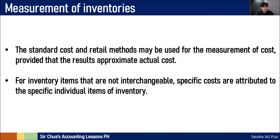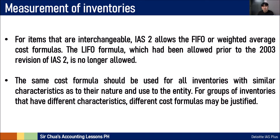For inventory items that are not interchangeable, we can use the specific costing method attributed to the specific individual items of inventory. If your inventory is not interchangeable and is unique, you assign its cost specifically. For items that are interchangeable — where all inventories look basically the same, like figurines of the same design — IAS-2 says you can use the first-in first-out method or the weighted average method. The last-in first-out method was allowed prior to the 2003 revision of IAS-2, but it is no longer allowed as a cost formula. The same cost formula should be used for all inventories with similar characteristics as to their nature and use to the entity. For groups of inventories with different characteristics, different cost formulas may also be justified.